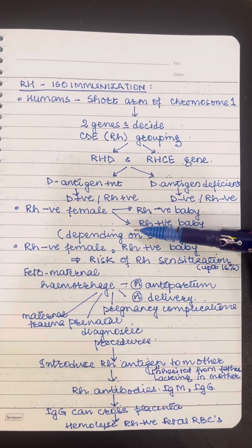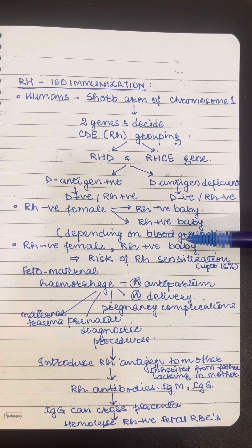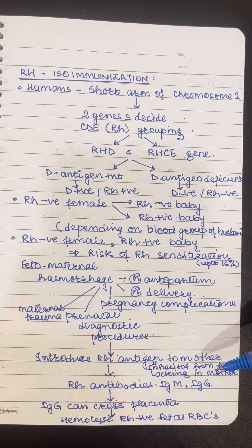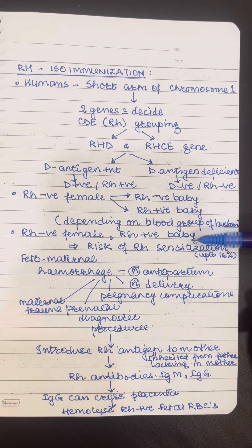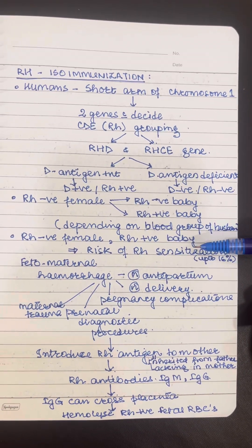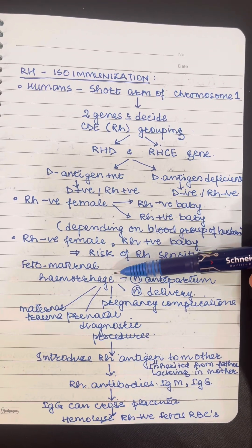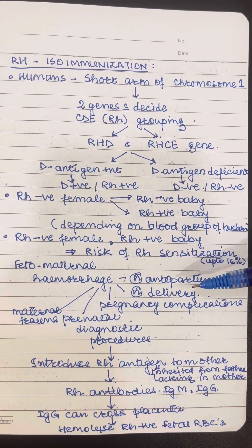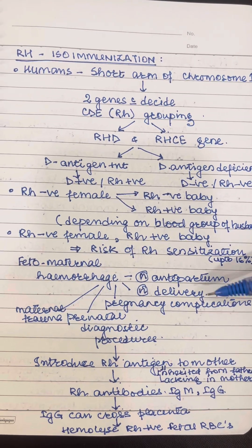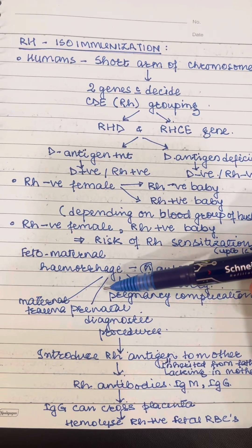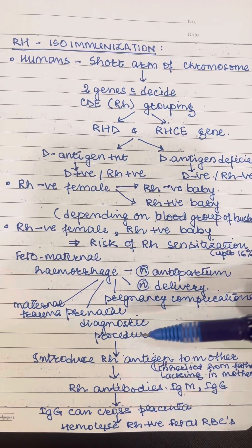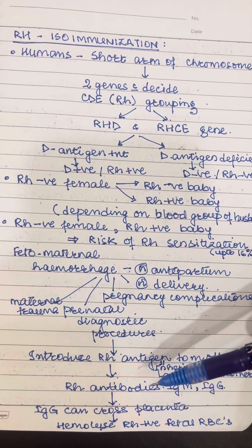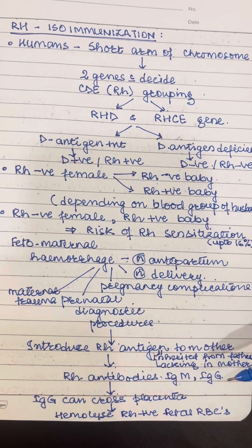So if there is an RH negative female who has an RH positive baby — due to the component inherited from the father which is lacking in the mother — there is a risk of RH sensitization. This will happen because a level of feto-maternal hemorrhage normally occurs during the antepartum period, at the time of delivery, and it increases further with certain pregnancy complications, prenatal diagnostic procedures, and maternal trauma. In all these cases the RH antigen is introduced to the mother and it incites the formation of RH antibodies of IgM or IgG type in the mother.